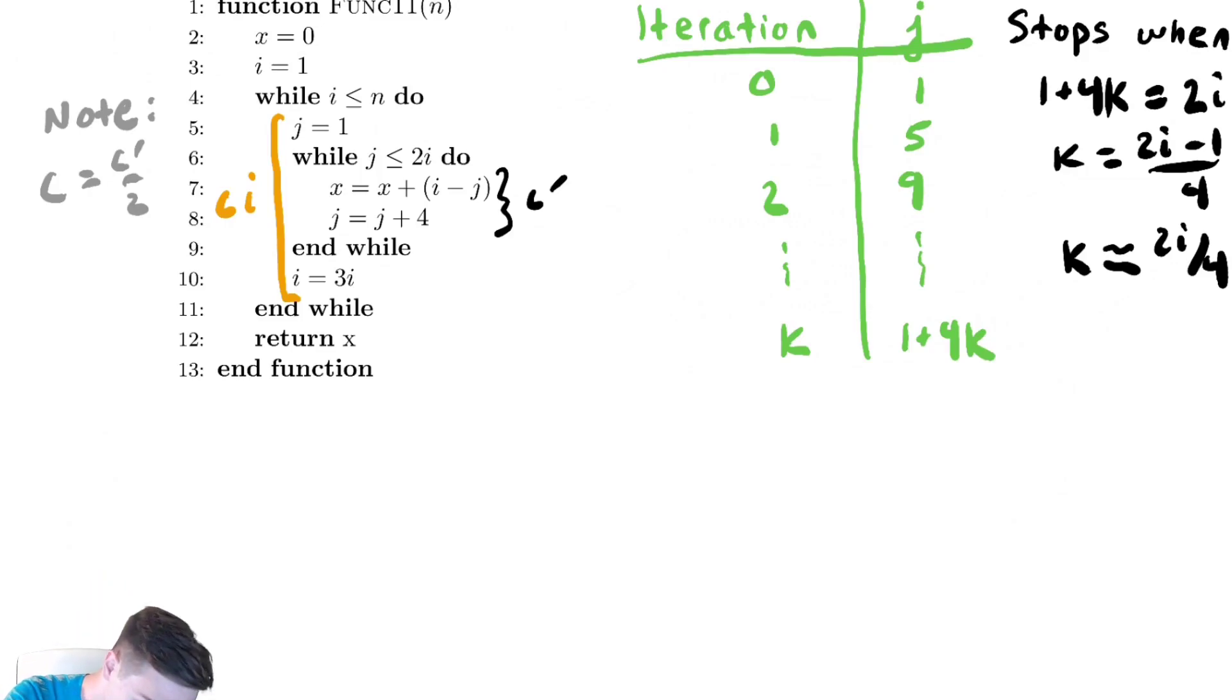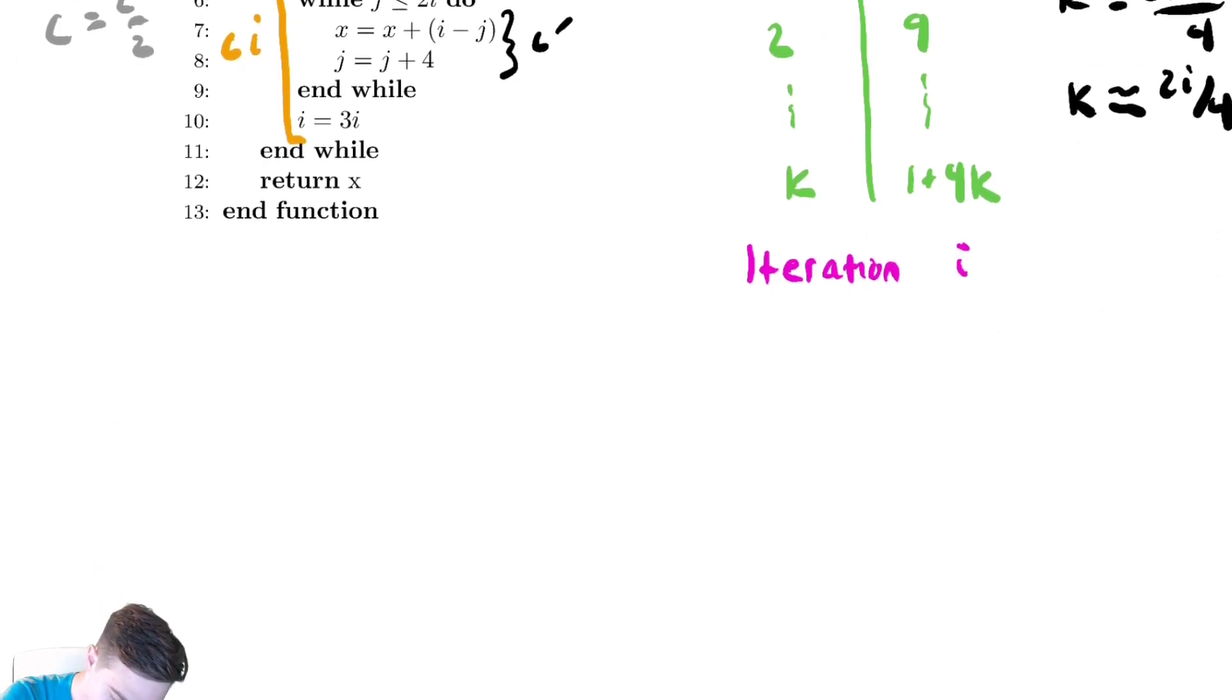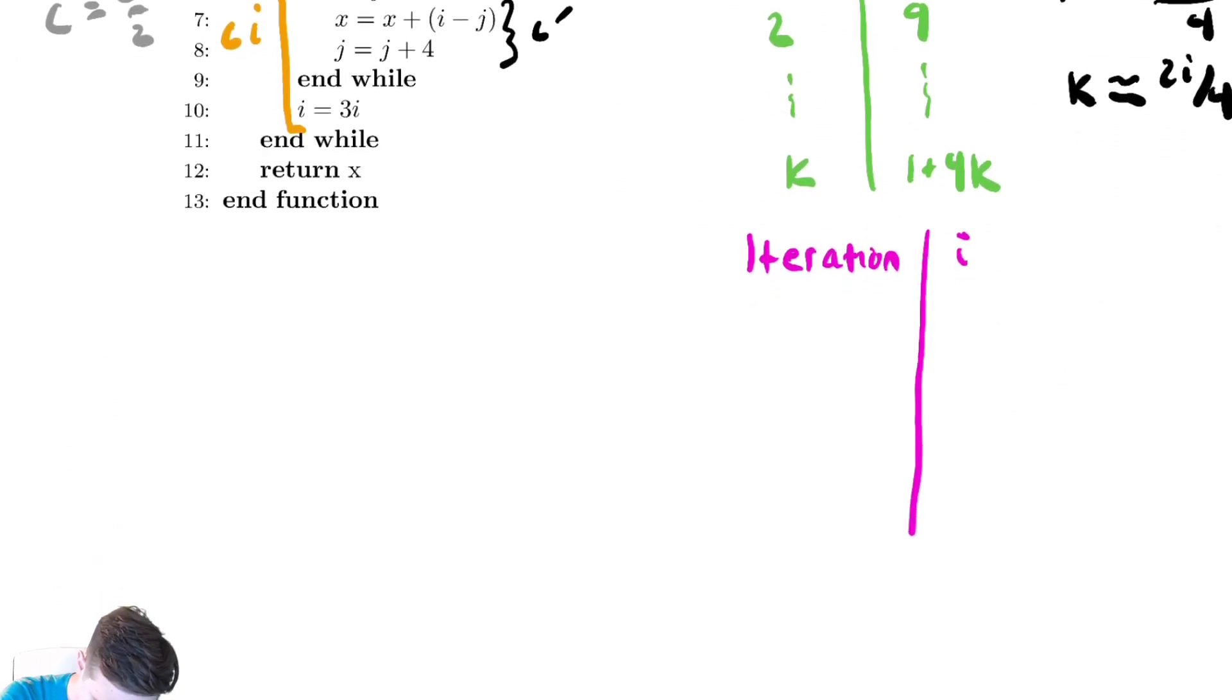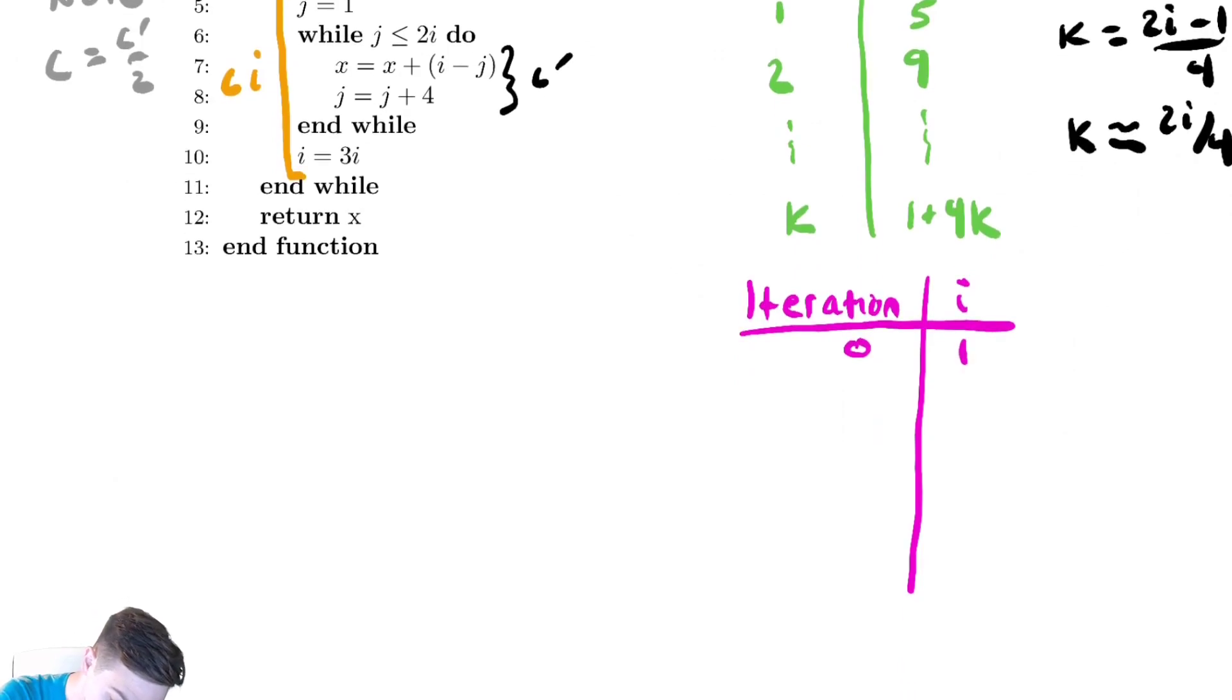So now in order to understand the outer while loop, we're going to have to make an iteration table. So let's make our iteration table over here. Iteration, and the loop variable for the outer while loop, which is i, 0. We start i at 1, and then we're updating it by multiplying by 3, then multiply by 3 again.